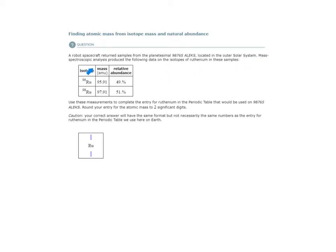So mass spec told us this and we talked a little bit about mass spec in the chapter 2 lecture slides. I have these two isotopes present and I'm given the relative abundances of these two isotopes. So what this means is 49% of all of the ruthenium in that sample was this isotope ruthenium-96.